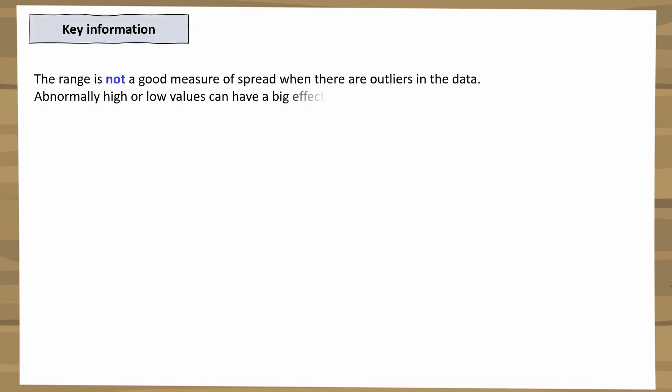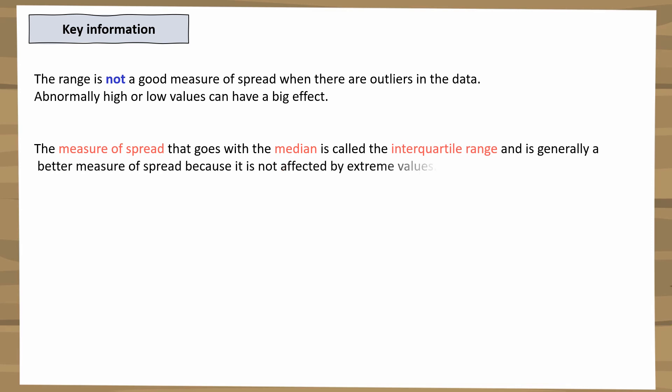Here's the key information: the range is not a good measure of spread when there are outliers in the data, because abnormally high or low values have a big effect on it. The measure of spread we normally use alongside the median is the interquartile range, and it is a better measure of spread because it is not affected by extreme values.